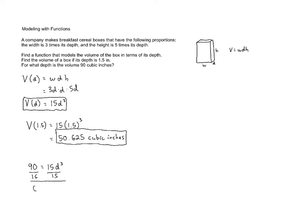90 divided by 15 is 6. So we get 6 equals d cubed. And if we want to figure out what d is, we need to take the cube root because the cube root undoes the cubing. So this gives us d equals the cube root of 6.